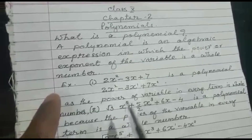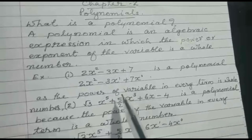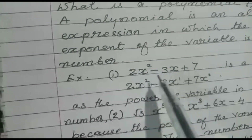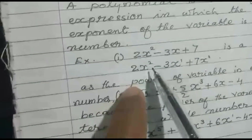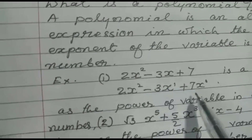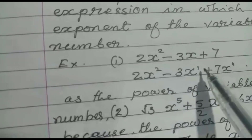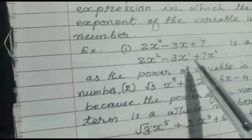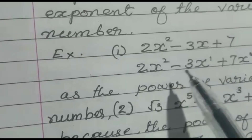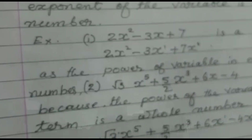Let us see a few examples. First: 2x² - 3x + 7. Here, the variable is x. In the first term, the power of x is 2; in the second term, the power of x is 1; and in the third term, the power of x is 0. Since 0, 1, and 2 are all whole numbers, this algebraic expression is a polynomial.